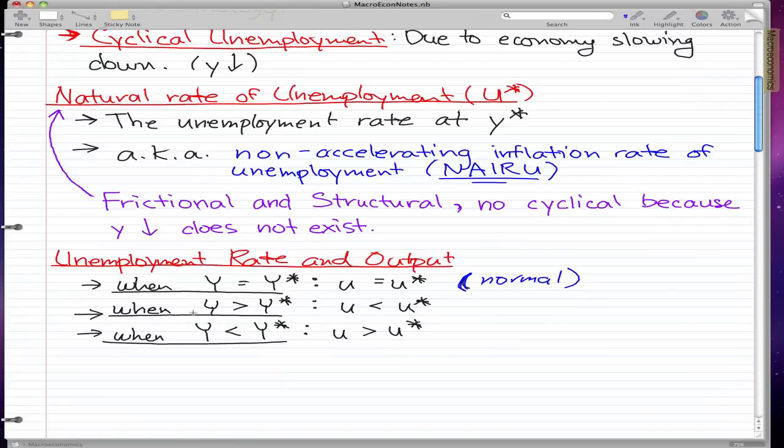And when our output is greater than our equilibrium output then our unemployment rate is less than the natural rate of unemployment and this is when inflation happens. Makes sense, we have more output than equilibrium output so we have less people that are unemployed and we have inflation.